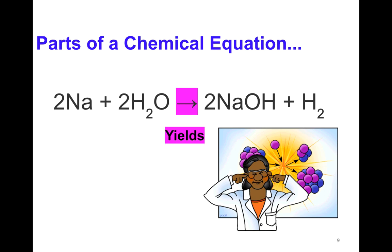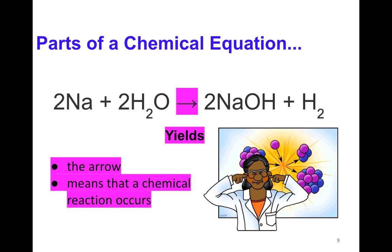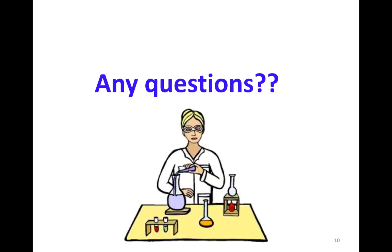So the arrow means yields. That's what you say when you read it. And it means that a chemical reaction occurs, that the reactants react to produce the products. So those are the parts of a chemical equation. And let us know if you have any questions.